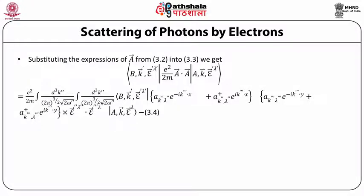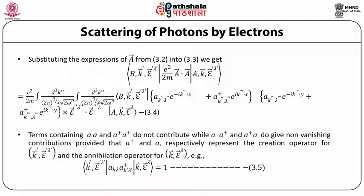The terms containing A·A and A†·A† do not contribute, while A·A† and A†·A do give non-vanishing contributions, provided that A† and A represent respectively the creation operator for k', e'^lambda' and the annihilation operator for k, e^lambda.